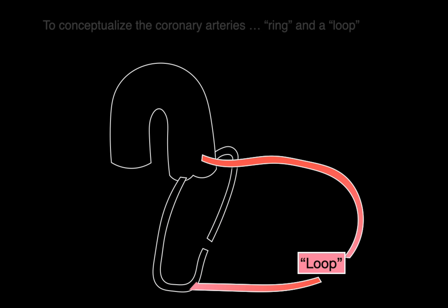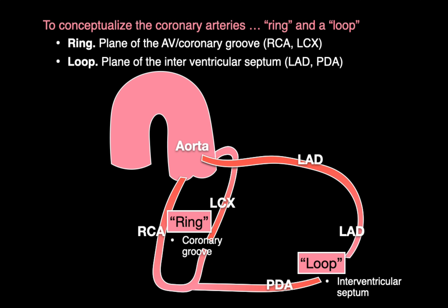Perpendicular to the ring is a loop. It's formed by the left anterior descending and the posterior descending arteries that course on the front and back of the interventricular septum, making a loop. The ring and the loop help us conceptualize the coronary arteries.